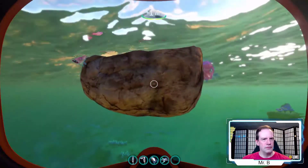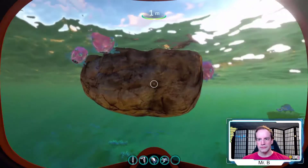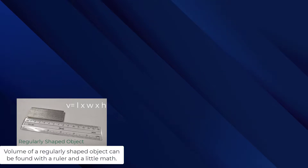How can we actually find the density of something like rock, or a regularly shaped object? To find density you need to find the mass and the volume. You can find the mass using a balance or scale. For regularly shaped objects, you can use an equation like volume equals length times width times height, measured with a ruler.